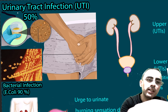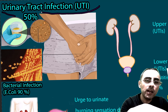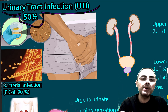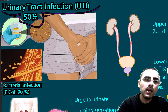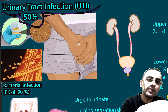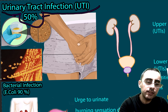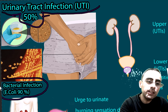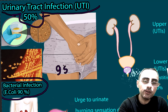Urinary tract infection is an extremely common condition. It affects around 50 percent of women at least once in their lifetime. It is usually caused by bacteria — Escherichia coli — which is responsible in 90 percent of cases.